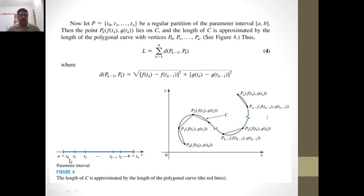Corresponding to each t₀, t₁, ..., tₙ, imagine the points on the smooth curve are P₀ = (f(t₀), g(t₀)), P₁ = (f(t₁), g(t₁)), P₂ = (f(t₂), g(t₂)), and so on, up to Pₙ = (f(tₙ), g(tₙ)). Joining these points P₀, P₁, P₂, ..., Pₙ₋₁, Pₙ, we get a polygonal curve.